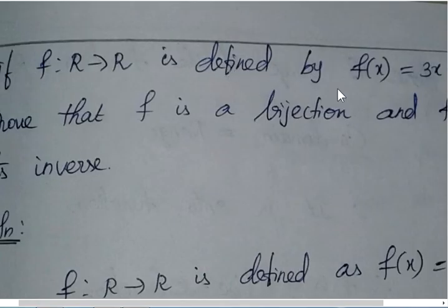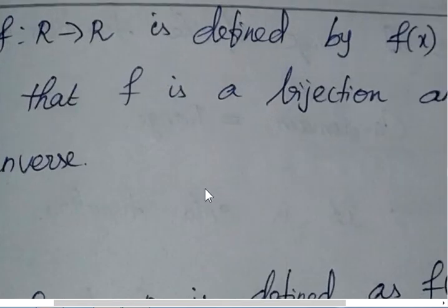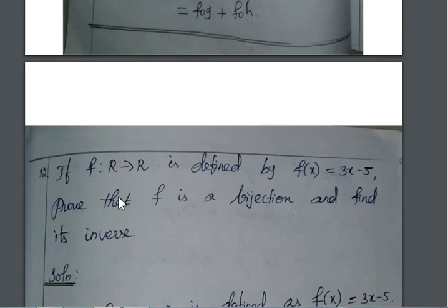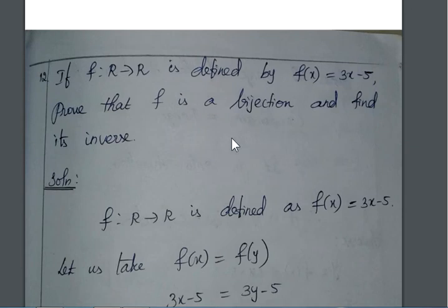Then next question, if f from R to R is defined by f(x) is equal to 3x, prove that f is a bijection. Already you know, if it satisfies both 1-to-1 and onto condition is called bijective function and define its inverse. So, f from R to R is defined as f(x) is equal to 3x minus 5.